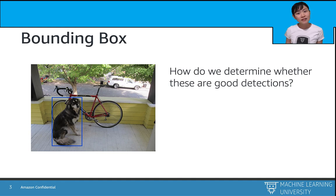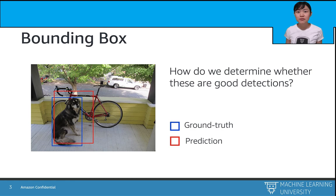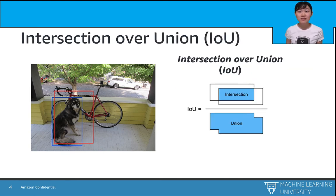But then how do we measure how precisely the coordinates of the predicted bounding box are? That brings us to the measurement matrix of the bounding box, which is also called Intersection over Union or IoU.